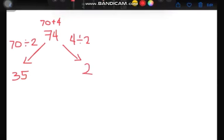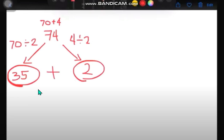Now, our answer for division is called quotient. Our quotient here are 35 and 2. So, we are going to add our quotient, and the sum would be 37.